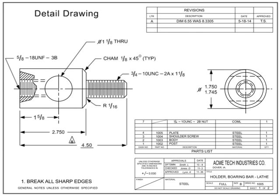A machine drawing details all the information required to take raw material and turn it into a finished part. The machining tolerances, material, finishes, etc. are all shown on the detail drawing.